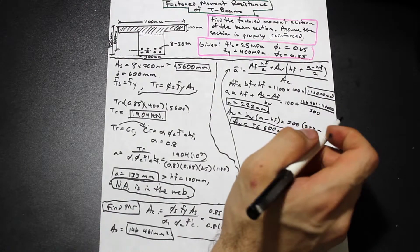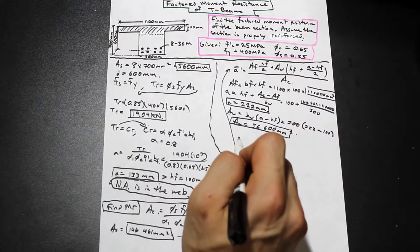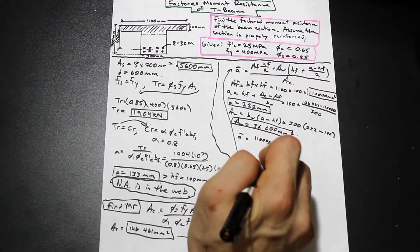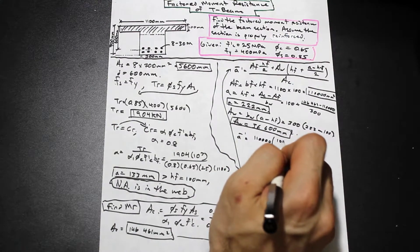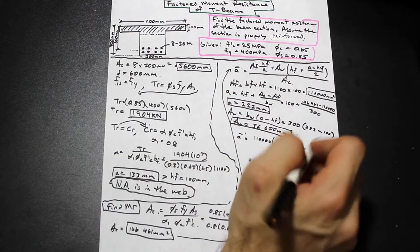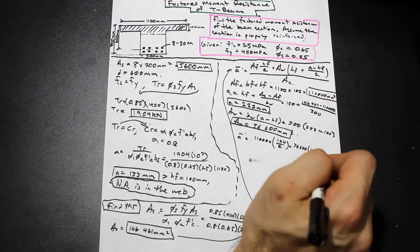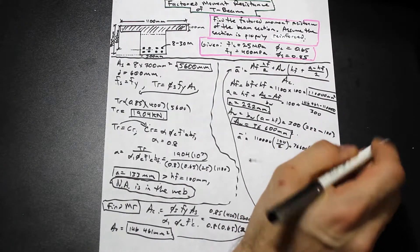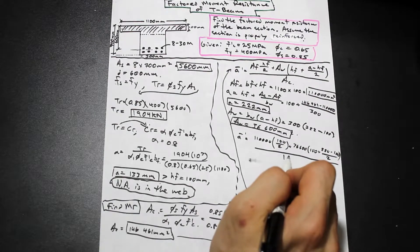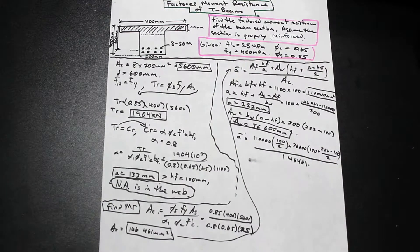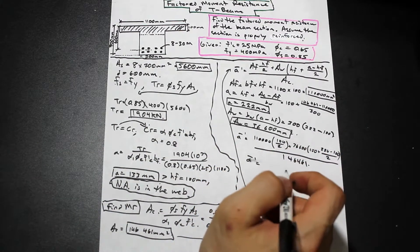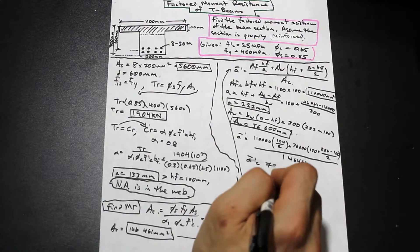Now we plug into the Ā' formula: Ā' = [110,000 × (100/2) + 36,600 × (100 + (222 − 100)/2)] / 146,461. Calculating that out, Ā' = 78 mm.